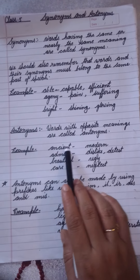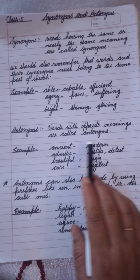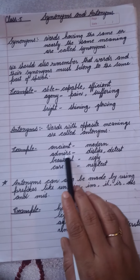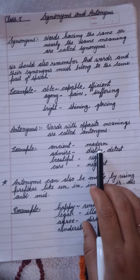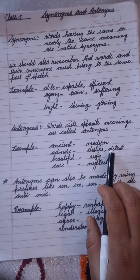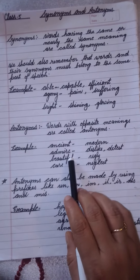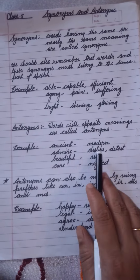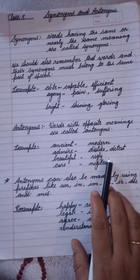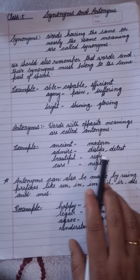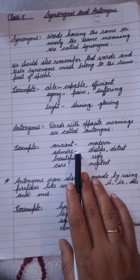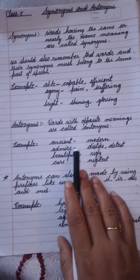For example: ancient — its opposite word is modern. Admire — dislike, detest. Beautiful — ugly. Care — neglect. These are just opposite words, and they are called antonyms.